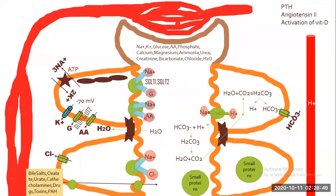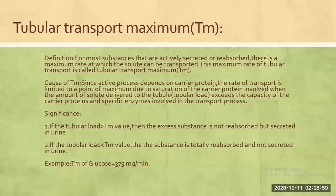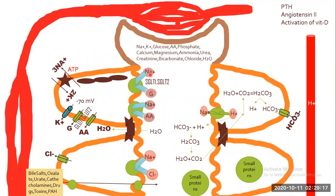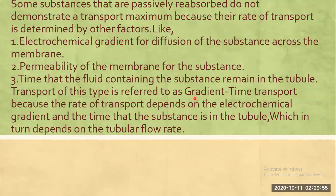Substances like glucose have a tubular transport maximum because their reabsorption depends on carrier proteins that can become saturated — the same applies to amino acids and chlorine. However, sodium does not have a true tubular transport maximum because its reabsorption is gradient-dependent and time-dependent, not solely dependent on carrier proteins. Sodium is reabsorbed via the electrochemical gradient through multiple processes.